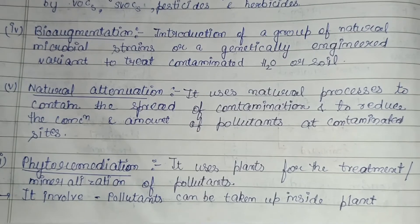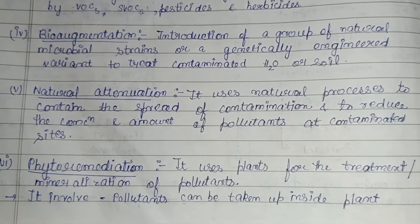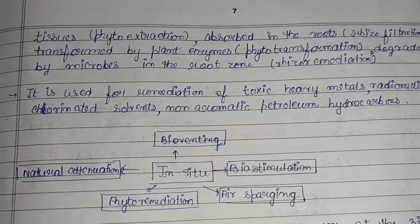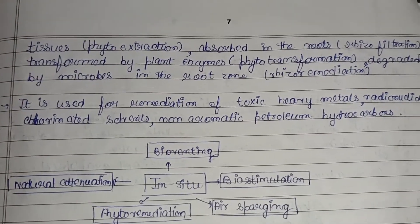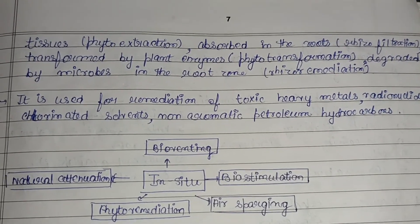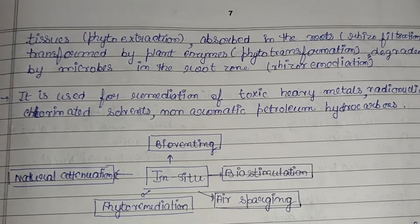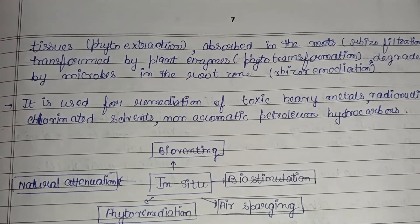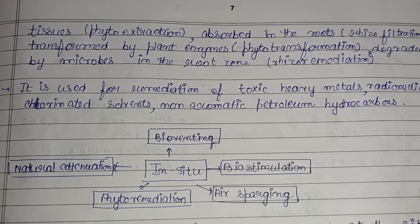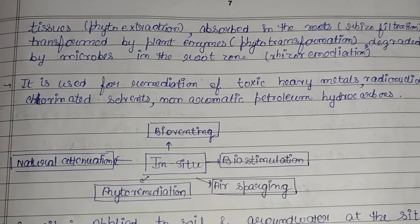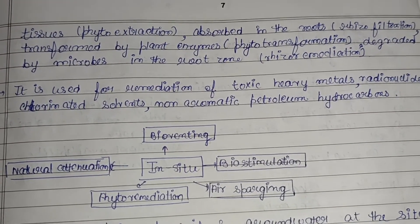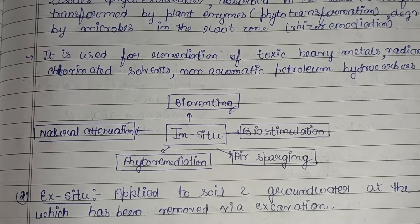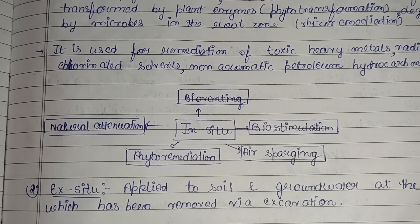Phytoremediation uses plants for the treatment or mineralization of pollutants. Pollutants can be taken up inside plant tissues — known as phytoextraction — absorbed in the roots — known as rhizofiltration — transformed by plant enzymes — phytotransformation — or degraded by microbes in the root zone, known as rhizoremediation. It is used for remediation of toxic heavy metals, radionuclides, chlorinated solvents, and non-aromatic petroleum hydrocarbons. These methods — air sparging, phytoremediation, bioventing, biostimulation, and natural attenuation — are all in-situ methods.